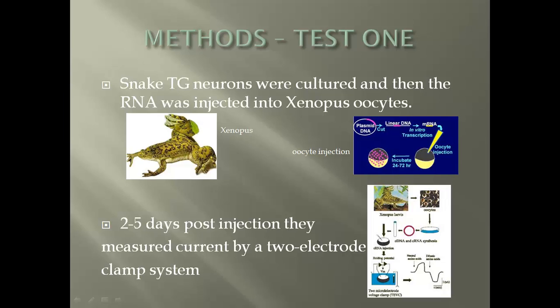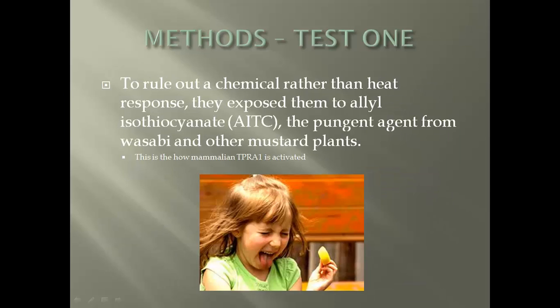To test how TRP A1 responds to heat, they took snake TG neurons cultured from euthanized snakes, and RNA was injected into a Xenopus oocyte. Two to five days post-injection, they used a two-electrode clamp system to measure the current applied to that membrane. Since TRP A1 is also a chemoreceptor in mammals, they exposed it to AITC — the pungent agent from wasabi and mustard plants — to rule out a chemical response, as that's how mammals respond when TRP A1 is activated by that agent.